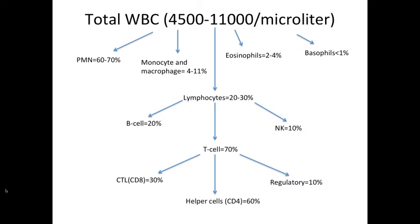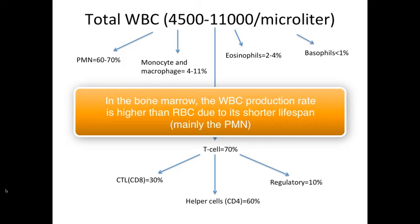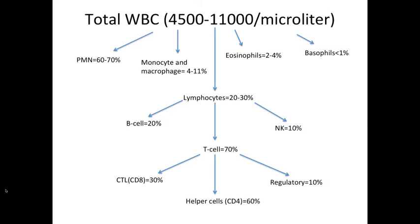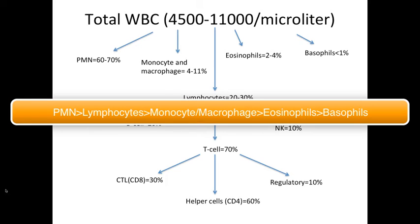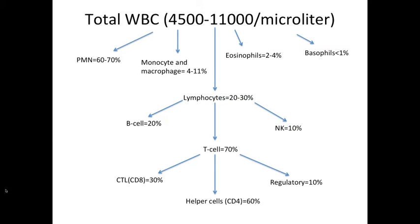Let's talk about the amount of T cells. Your total white blood cell count is between 4,500 and 11,000 per microliter. Compare this to red blood cells, which are around five million per microliter. The most common white blood cells are neutrophils, abbreviated PMN for polymorphonuclear neutrophils. The second most common are lymphocytes, then monocyte-macrophages, followed by eosinophils, and the least common are basophils. Your lymphocytes are around 20 to 30 percent of white blood cells.